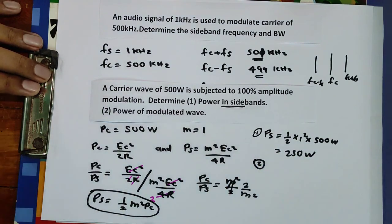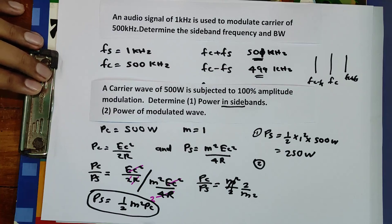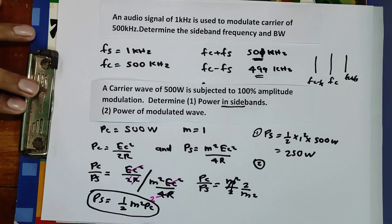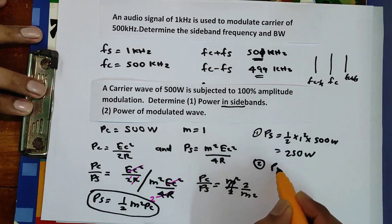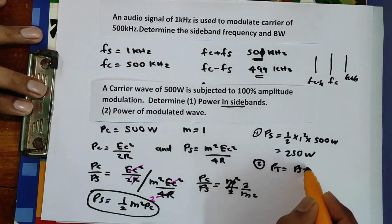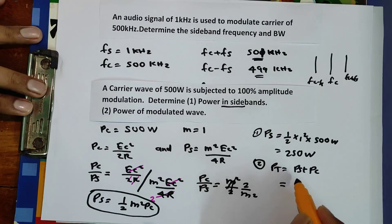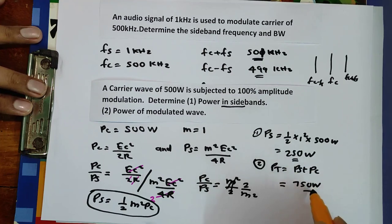The power of the modulated wave is P_total = P_sideband + P_carrier = 250 + 500 = 750 watts.